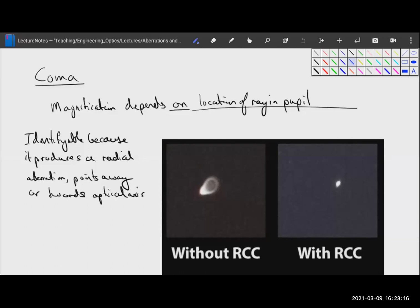Okay, so now we're going to talk about coma. Coma is a little bit different than spherical aberration because it is affected by the radial position of the point source.